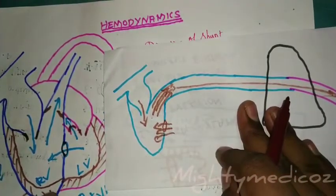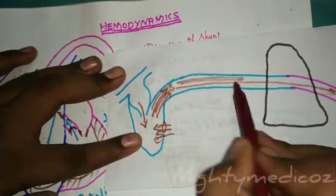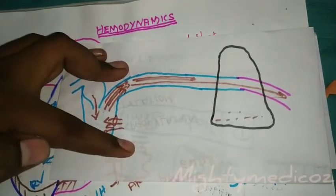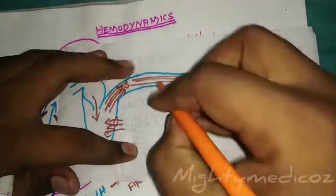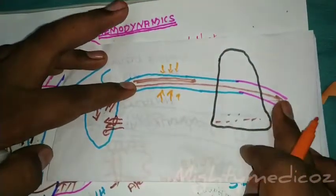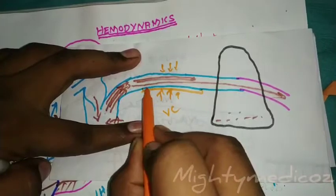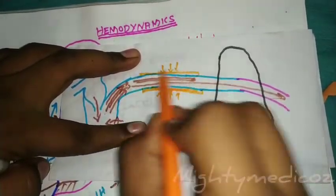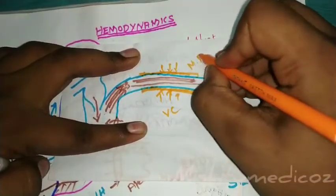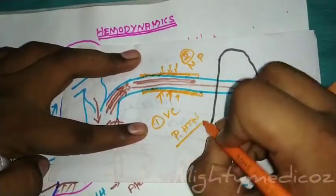There will be volume overload and development of right ventricular hypertrophy. The hypertrophied right ventricle will push a large volume of blood to the pulmonary artery and to the lungs. This may lead to the development of pulmonary edema. To prevent pulmonary edema, there will be pulmonary vasoconstriction, and there will be proliferation of the tunica media layer of pulmonary arteries and vessels.